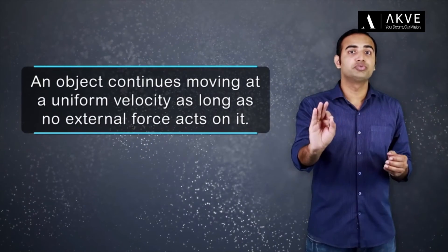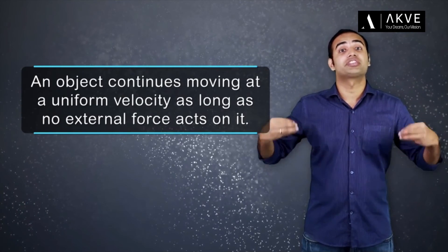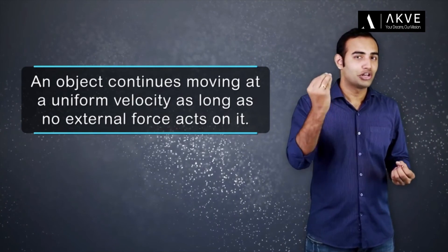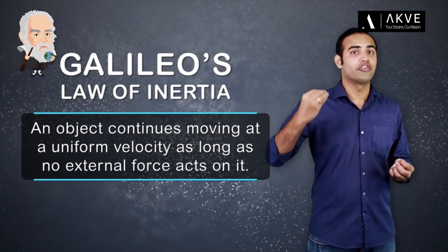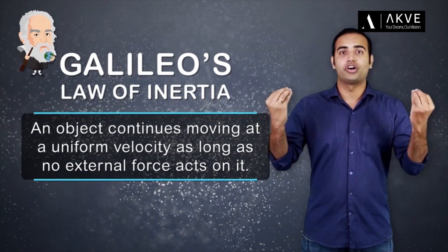Or in other words, an object continues moving at a uniform velocity as long as no external force acts on it. This is also known as Galileo's Law of Inertia, which later became the basis for Newton's first law of motion.